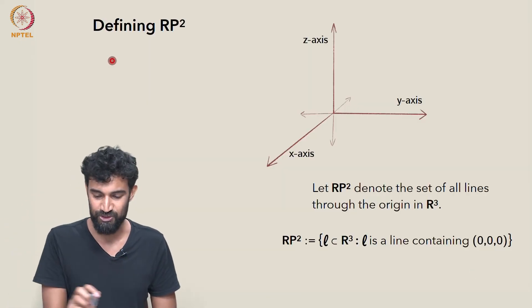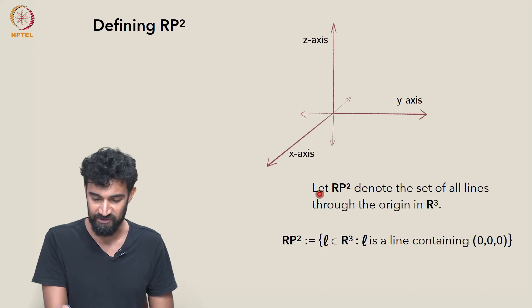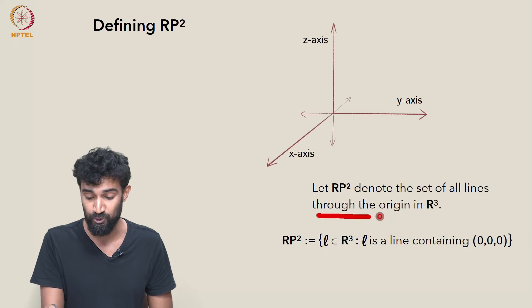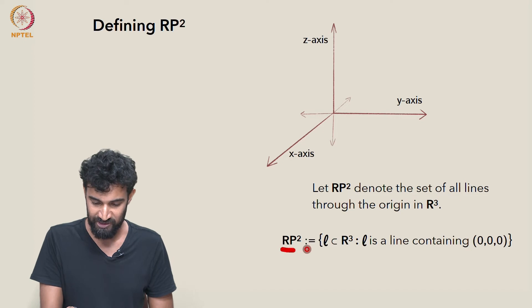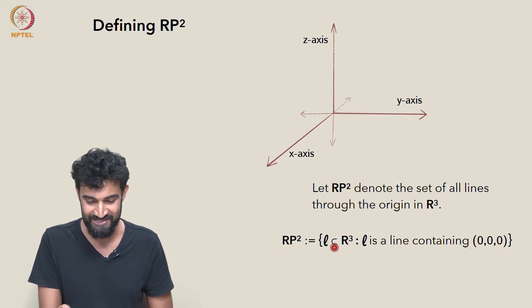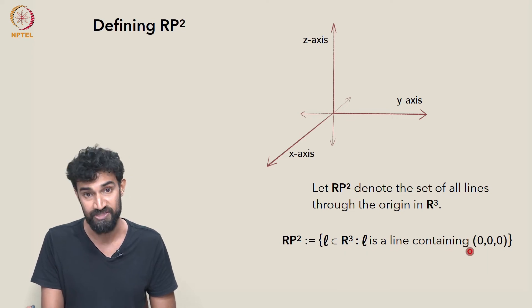So to define RP², let's just let RP² denote the set of all lines through the origin in R³. So writing it out in a more mathematical notation, it's the set of lines L in R³ such that L contains the origin (0,0,0).